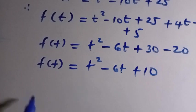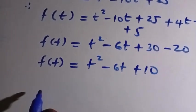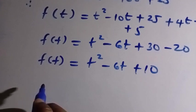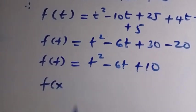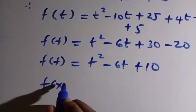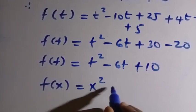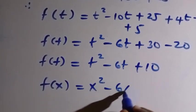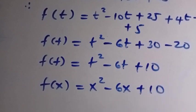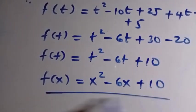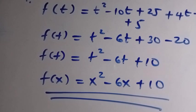We need to find f of x, not f of t. So we replace t with x, giving us f of x equals x squared minus 6x plus 10. We get the same answer when we apply the substitution method, and similarly when we apply the form manipulation method. So this is how it works.